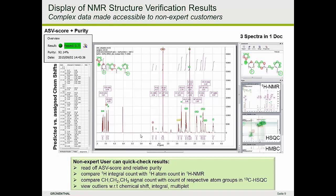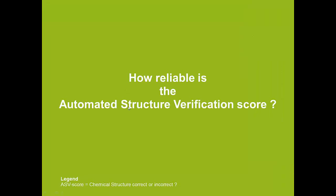Only for deeper analysis — for experts or very well-trained users — would you check chemical shifts for carbons between the prediction and the measured ones, or look for long-range couplings in the HMBC. That would be the application when you're worried about regioisomers or other mix-ups in your samples. Since the core activity relies on these automated structure verification scores, one has to raise the question: how reliable is the automated structure verification scoring?